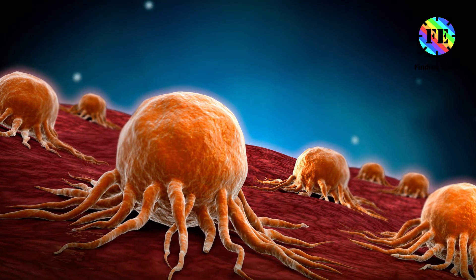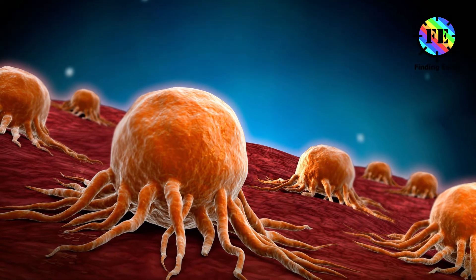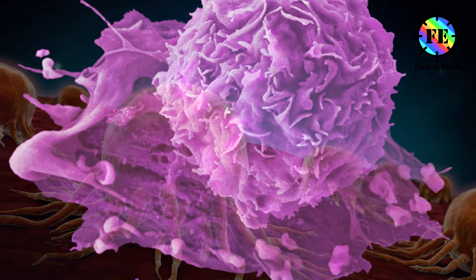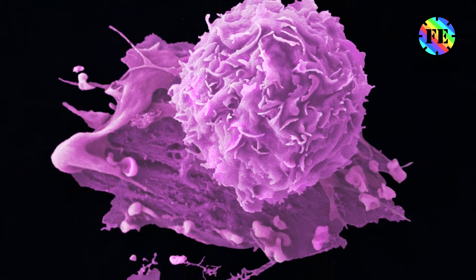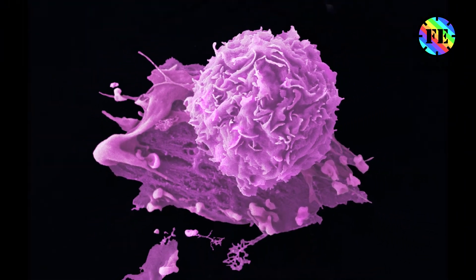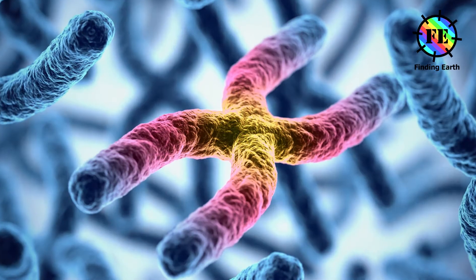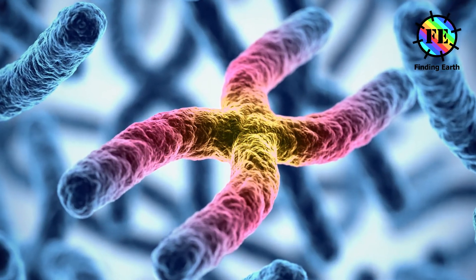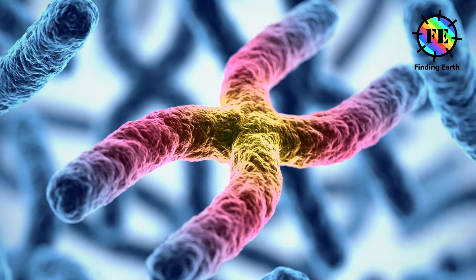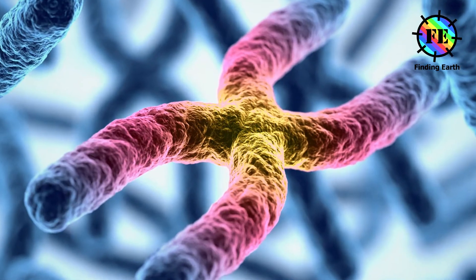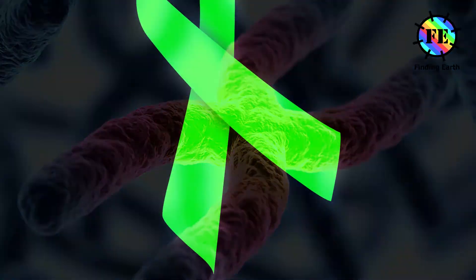Cancer is a type of disease where cells grow out of control, divide and invade other tissues. With cancer, the normal process of cell division goes out of control. Cells change their nature because mutations have occurred in their genes. All the daughter cells of cancer cells are also cancerous.